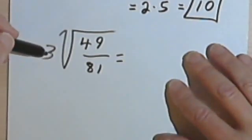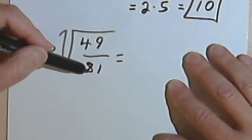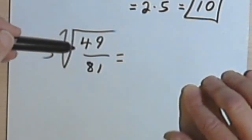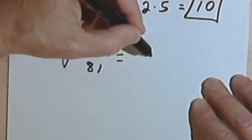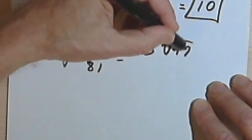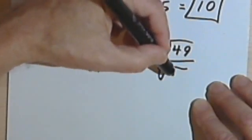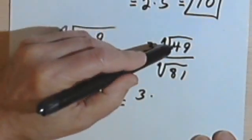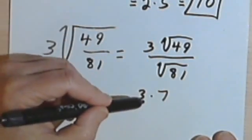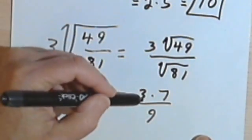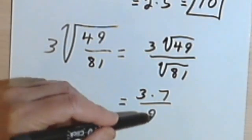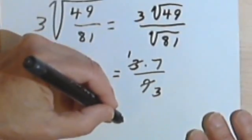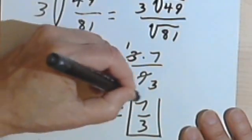One more: here we have 3 times the square root of 49 over 81. I see that 49 and 81 are both perfect squares, so it makes sense to separate these into two radical signs. The 3 is going to multiply the numerator, so I'm going to have 3 times the square root of 49 over the square root of 81. The square root of 49 is 7, and the square root of 81 is 9. Before multiplying 3 times 7, I realize I can factor a 3 out of both the 3 and the 9, giving me 1 over 3, so my end result is 7 thirds.